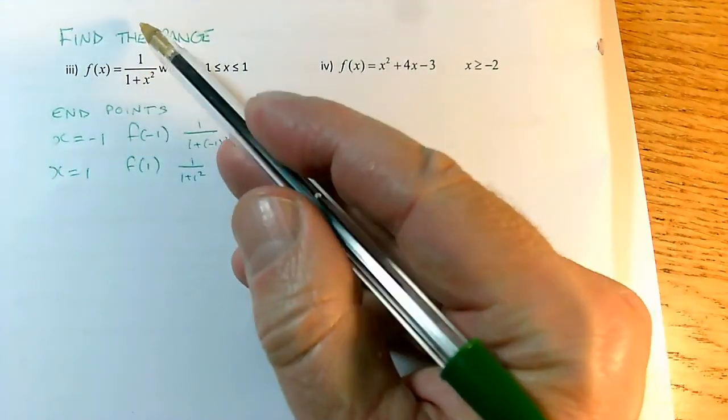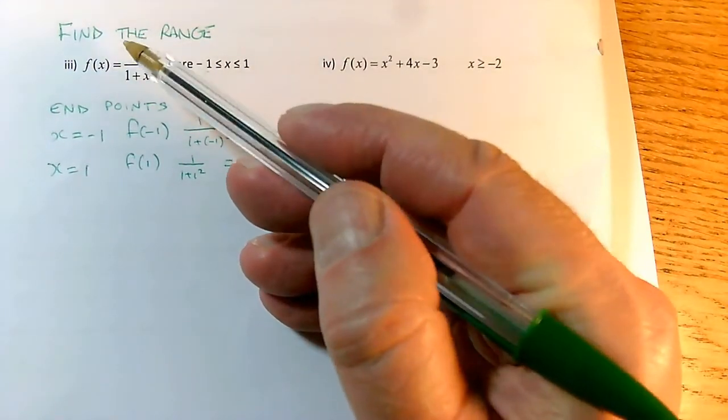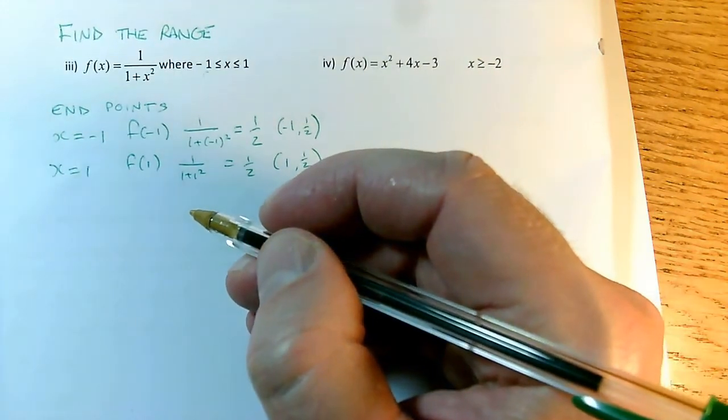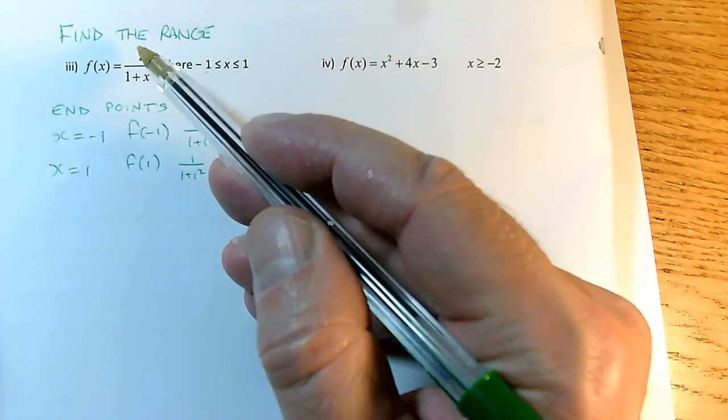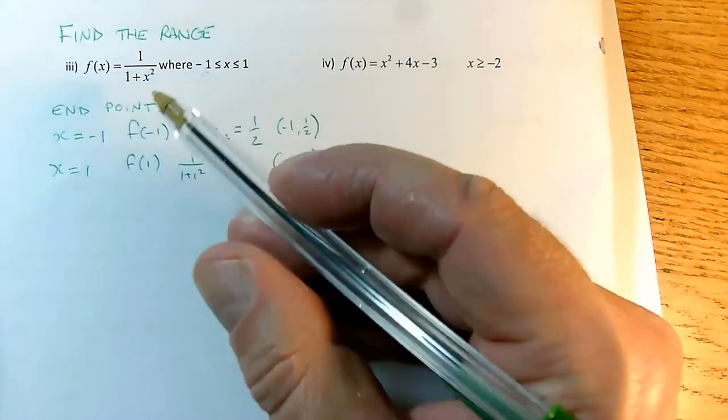Now the approach we took before is to sketch this graph. And if you've got a graphical calculator, then good luck to you, you can get this graph up. But if you haven't got a graphical calculator, then we have to take another approach. This has got several things going on. We've got a fraction, and on the bottom of a fraction I've got 1 plus x squared.